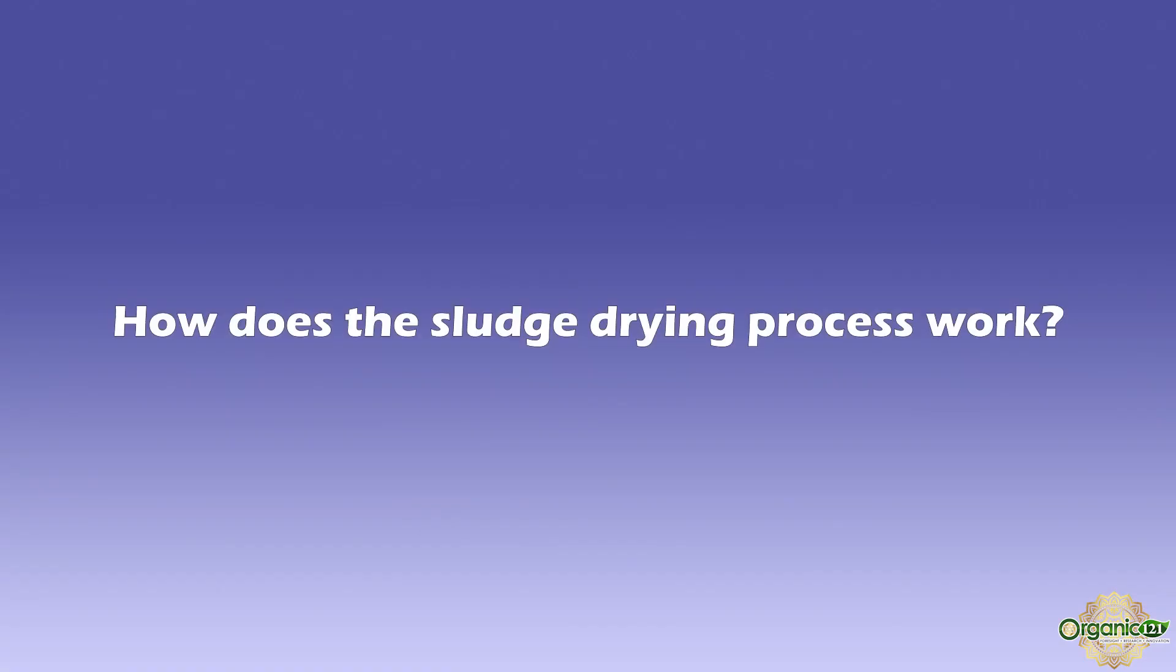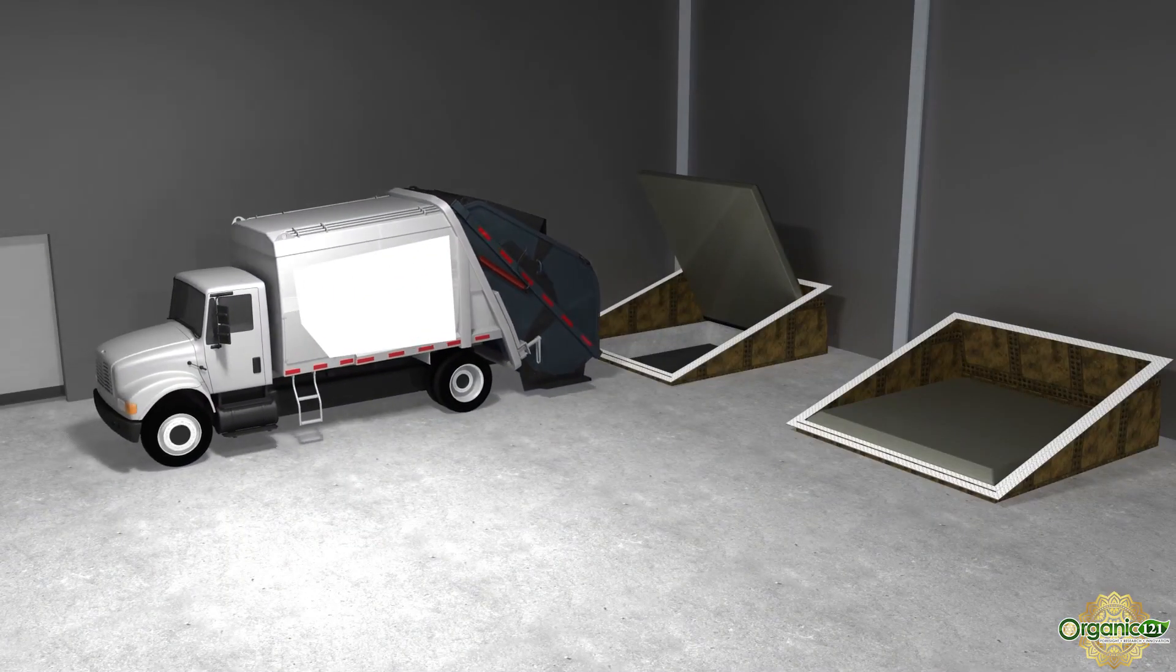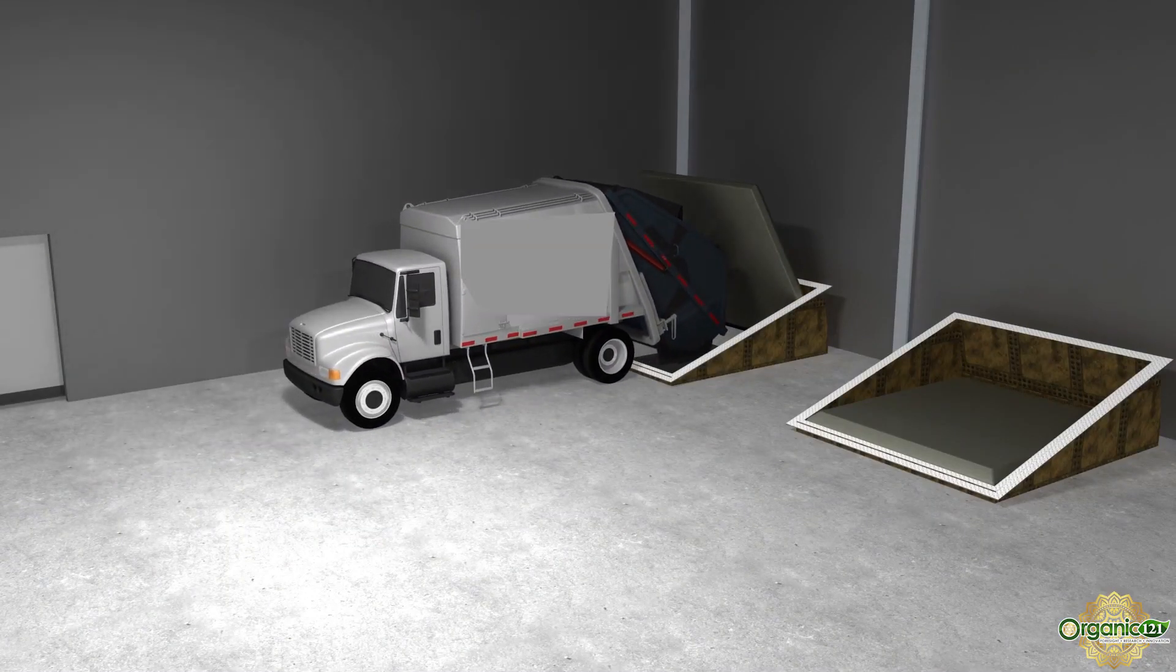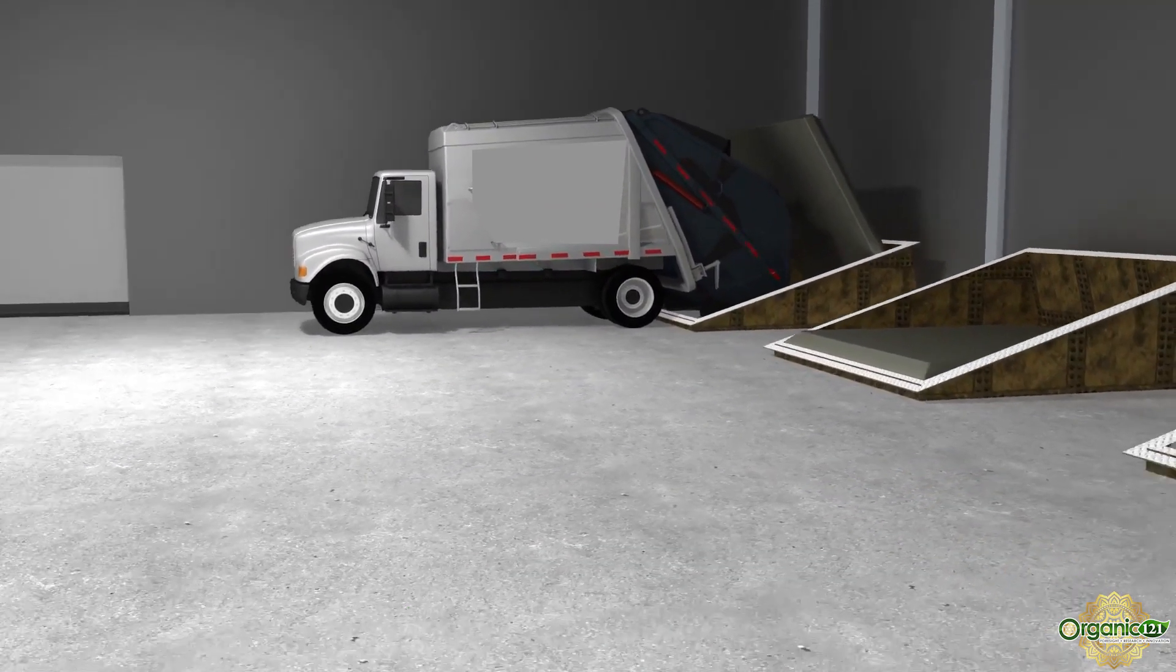How does the sludge drying process work? First, wet sludge is stored in an airtight underground bunker where the sludge is stored for a maximum of three days.